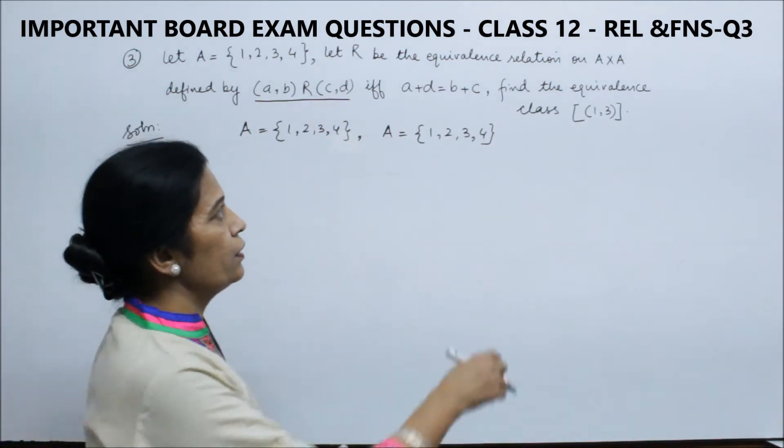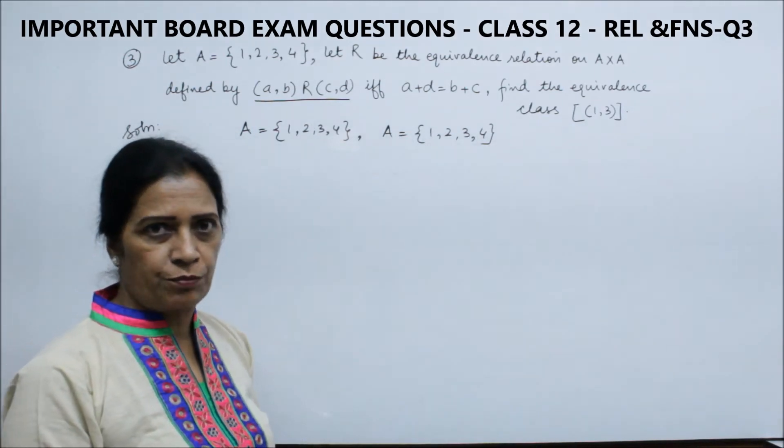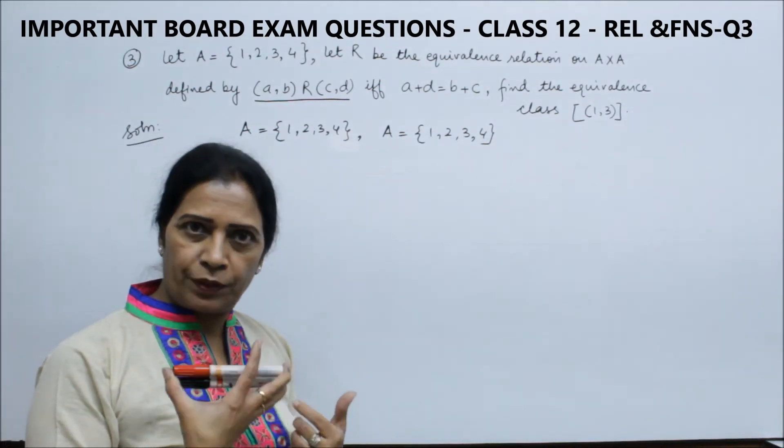So, find the equivalence class [1,3] is equal to [1,3] pair. This means we have another pair.